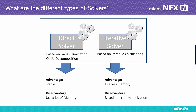Generally, two types of solver exist: a direct solver, which is based either on the Gauss elimination or the LU decomposition, and an iterative solver, in which errors are minimized and solutions converge through iterative calculations. A direct solver is widely used in structural analysis because finding solutions is stable without being affected by the numerical characteristics of the matrix. However, it rapidly tends to demand significant memory space and a large amount of calculations for large problems.